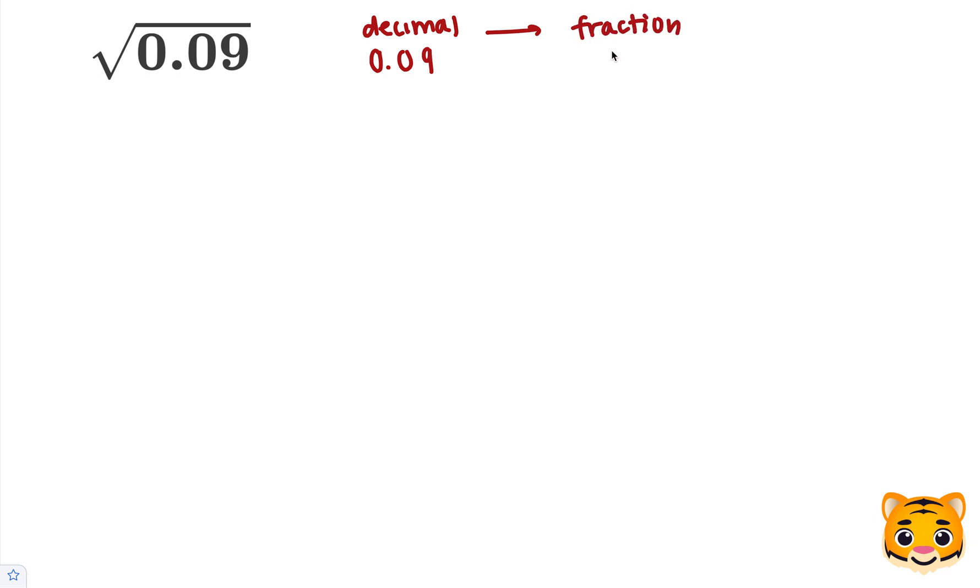0.09 as a fraction is 9 over 100, because the 9 is in the one-hundredths place value. So, now that we have a fraction, we can then employ an important math rule.